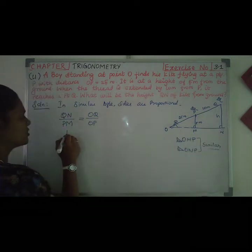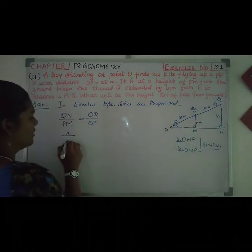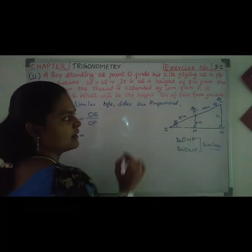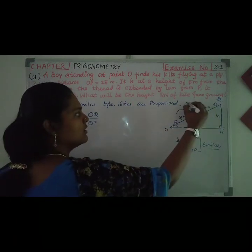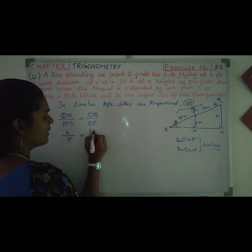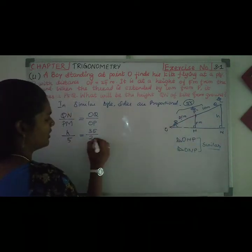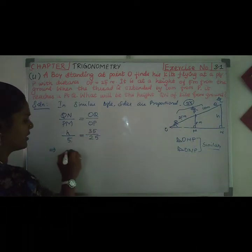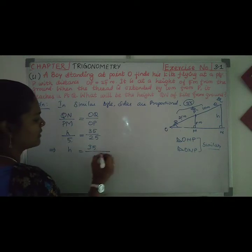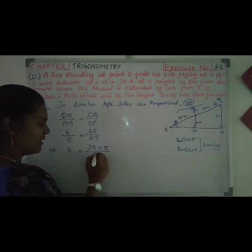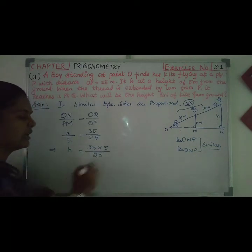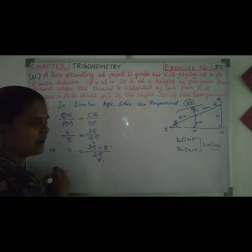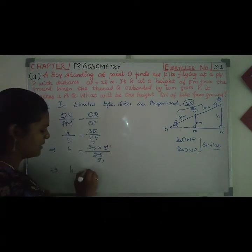This is equal to: OQ is 35, OP is 25. So QN divided by PM equals 35 divided by 25. Simplifying: 35 divided by 5 is 7, and 25 divided by 5 is 5. So the height is 7.